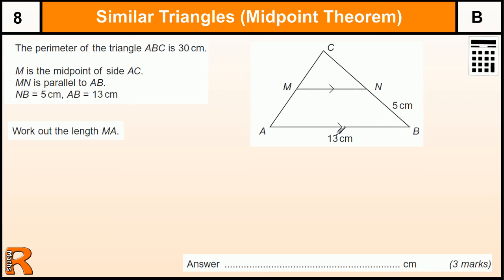These sides are parallel, so these angles are all the same. This angle here is the same as this angle, these two are the same, and this angle here is in both triangles. That tells us that triangle CNM and triangle ABC are similar triangles because they have all the same angles — so one is just an enlargement of the other.